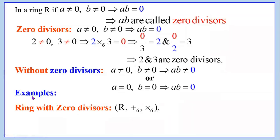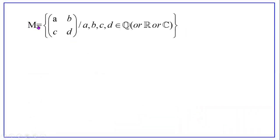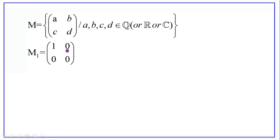Another example of a ring with zero divisors is M with addition and multiplication, where M is the set of all 2×2 matrices with entries A, B, C, D being rational, integer, real, or complex numbers. Choose two elements: let M1 = [[1,0],[0,0]] and M2 = [[0,0],[1,0]]. M1 is not equal to 0 because it is not a zero matrix. M2 is not equal to 0 because it is not a zero matrix.